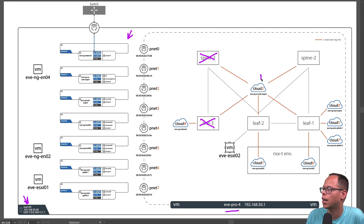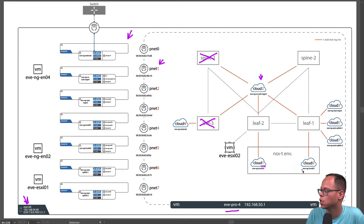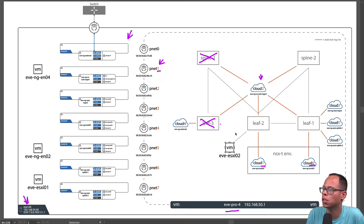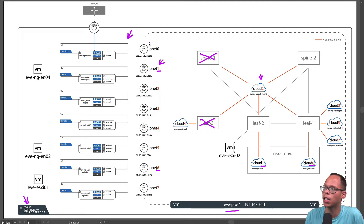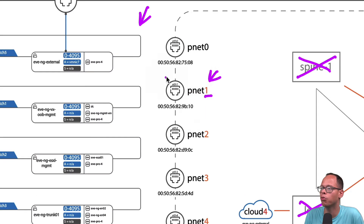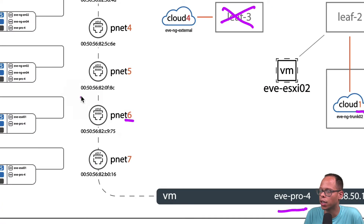Today we're going to be focusing on these clouds and how they relate to these PNets on the left-hand side. In today's demo, we're going to be building out cloud one and cloud six. These clouds are associated with these PNets — the numbers highlighted in orange. So cloud one is going to be associated with Pnet one, and cloud six is going to be associated with Pnet six. These PNets are then bridged to the interfaces that we create and attach to the EVE-NG virtual machine. Pnet one is bridged to ETH one, and Pnet six is bridged to ETH six.